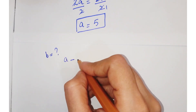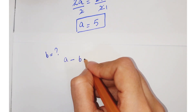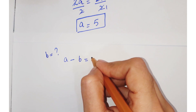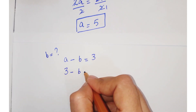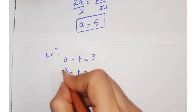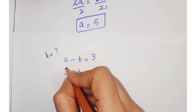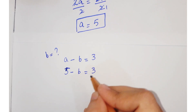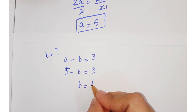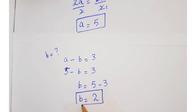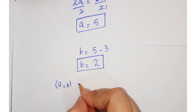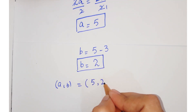Now calculating b: we have a minus b equals 3. Putting the value a equals 5, we get 5 minus b equals 3. So b equals 5 minus 3, which gives b equals 2. From the second case, we get a and b equals 5 and 2.